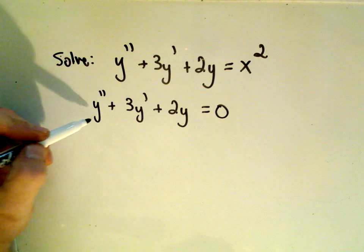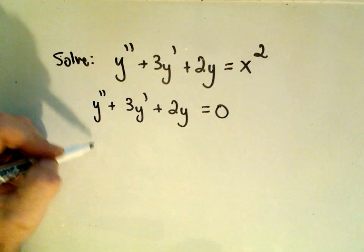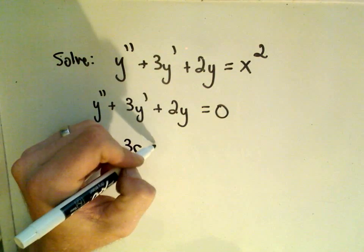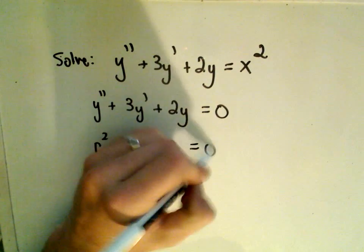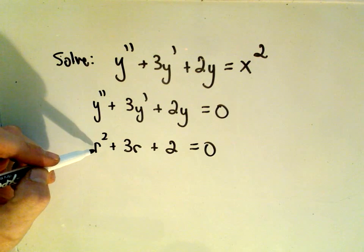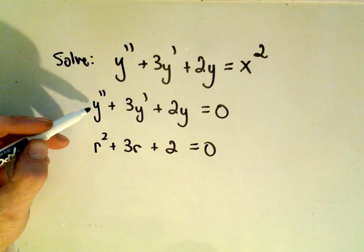Now we turn this into what's called the auxiliary equation, r squared plus 3r plus 2 equals 0. And then based on the solutions to this auxiliary equation, it's going to tell us solutions to our homogeneous second-order differential equation that we have here.